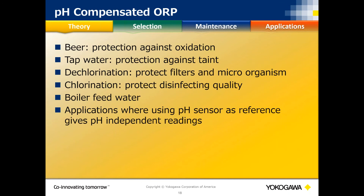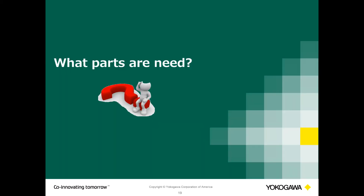pH compensated ORP is used in applications like beer brewing for protection against oxidation, tap water, dechlorination, chlorination, and boiler feed water — anywhere where pH is also changing and affecting ORP readings. Using the pH glass as a reference ensures the millivolt values seen are due to the oxidation reduction of the chemical being monitored, not artifacts of pH change.